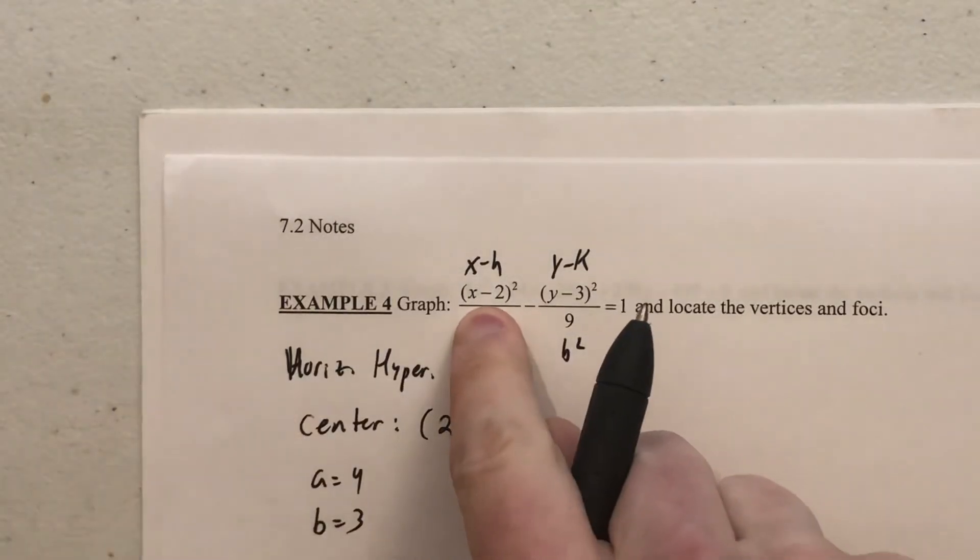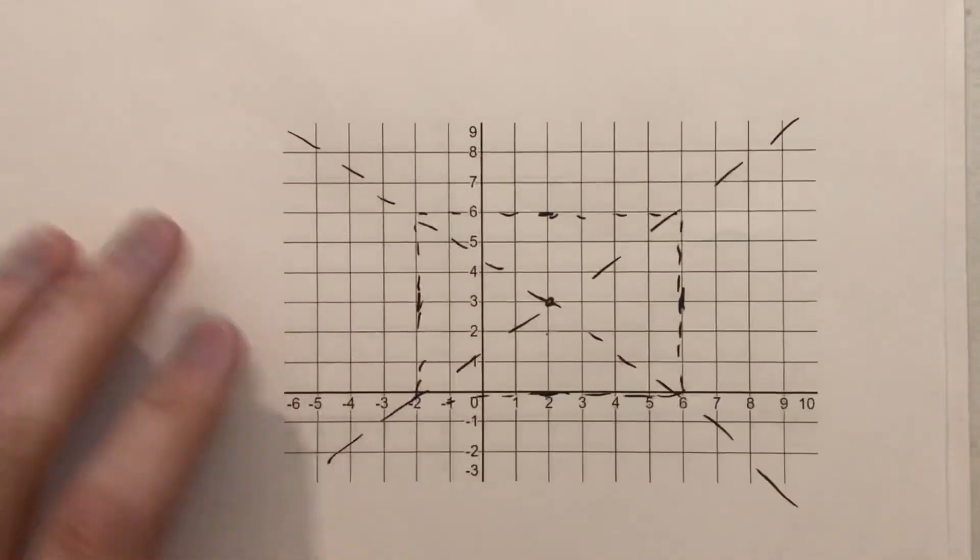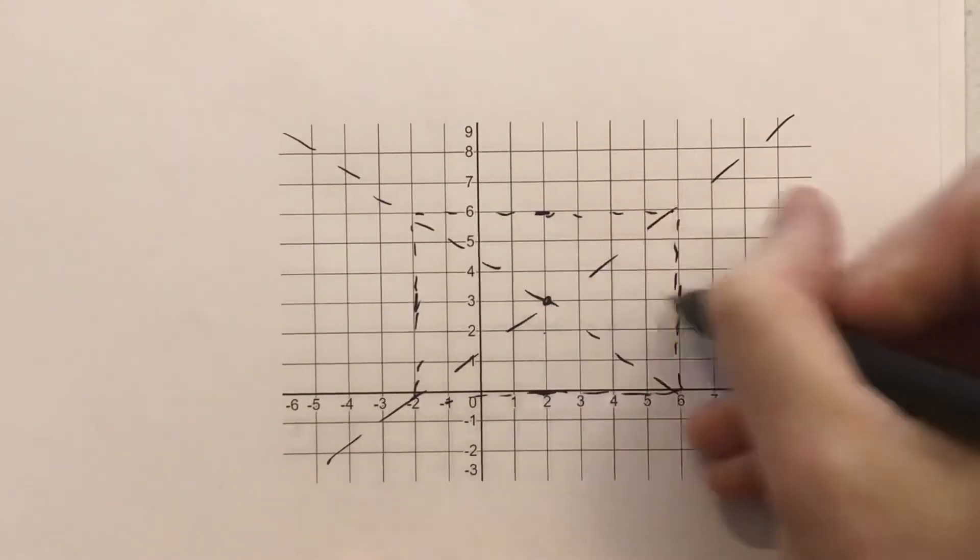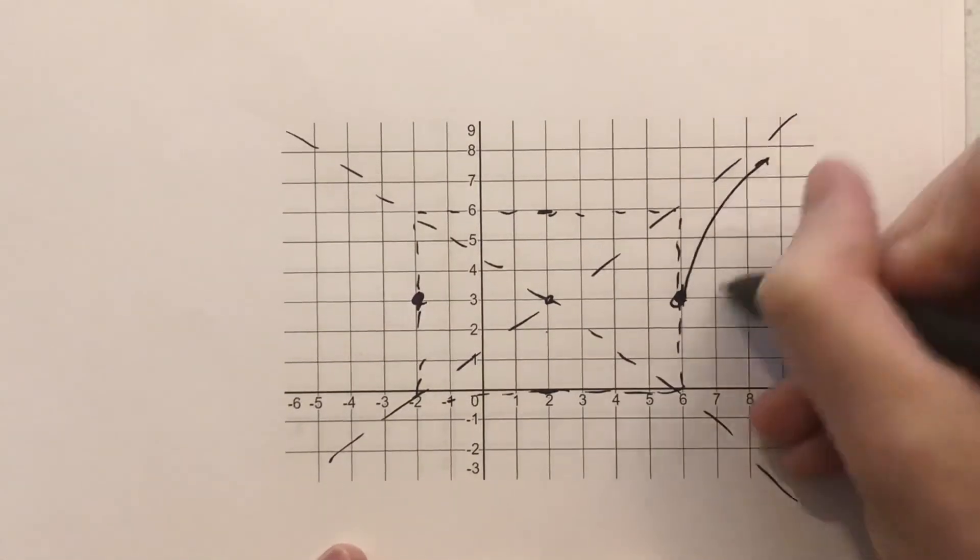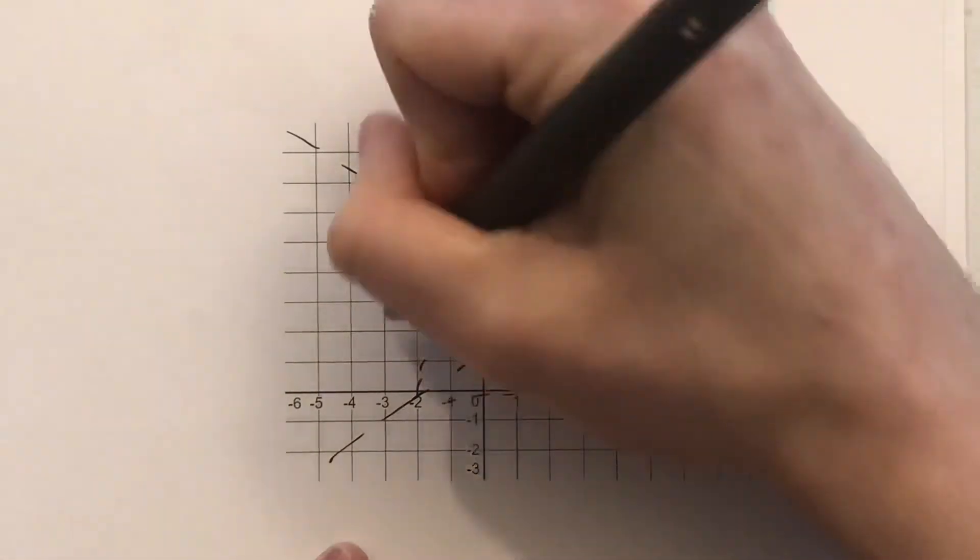From there, since we said it was a horizontal hyperbola because of the x term coming first, we know this thing opens left and right. So in line with that center, we know our vertices will be there, opening to the left and right.